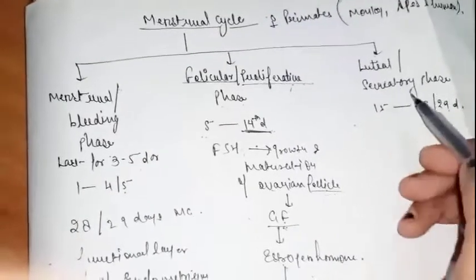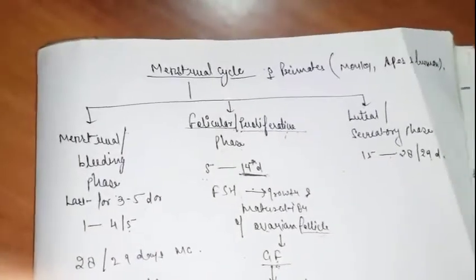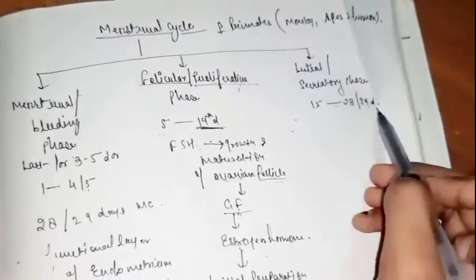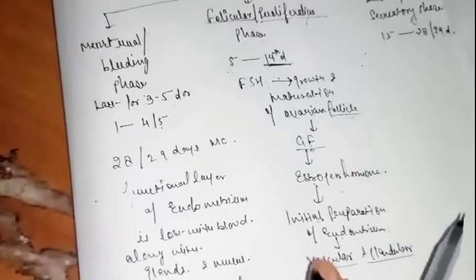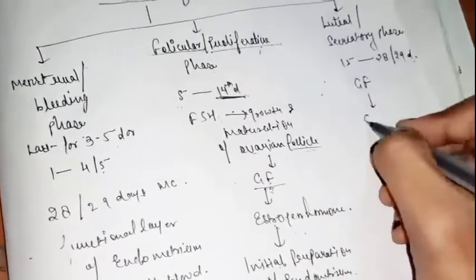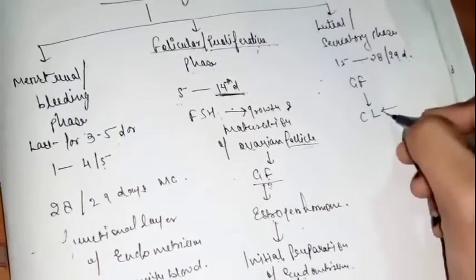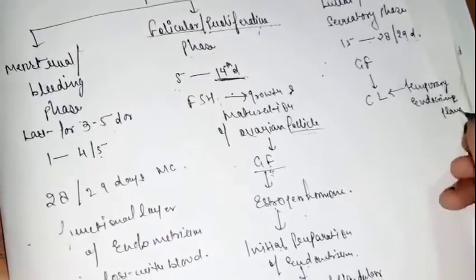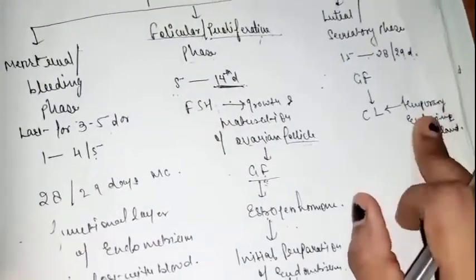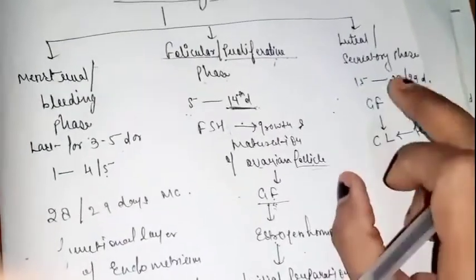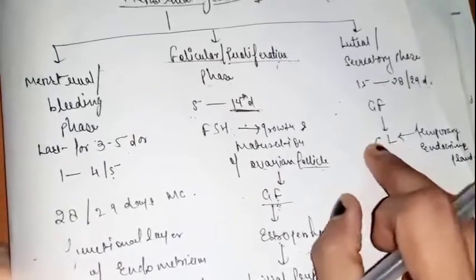The next phase is the luteal or secretory phase, which occurs from the 15th to the 28th or 29th day of the menstrual cycle. After ovulation at the 14th day, the Graafian follicle transforms into the corpus luteum, which is a temporary endocrine gland. This is also a frequently asked NEET point — corpus luteum is the temporary endocrine gland found in the menstrual cycle.